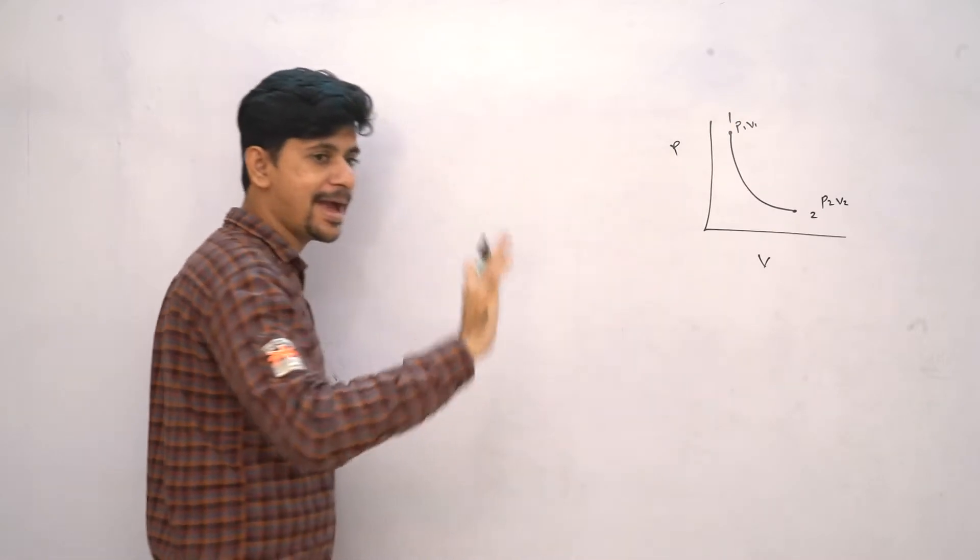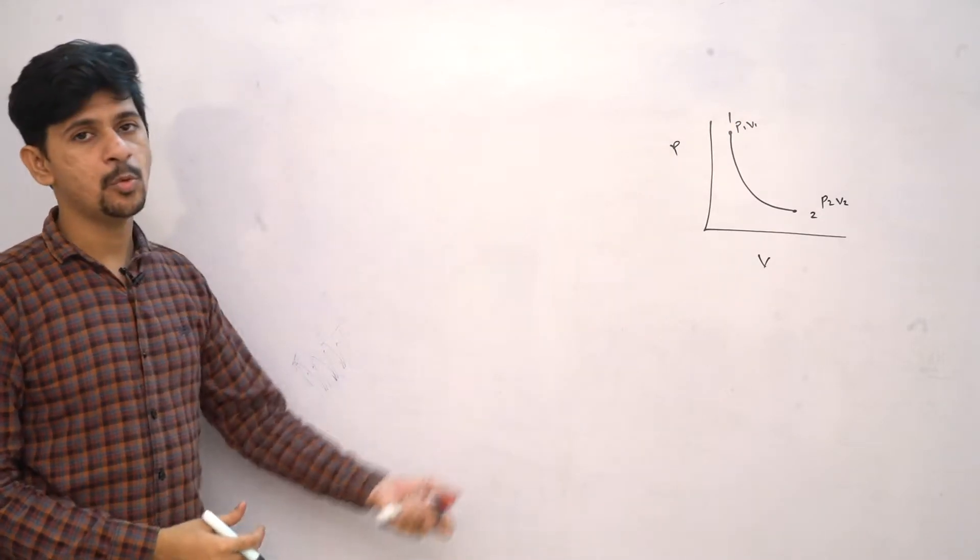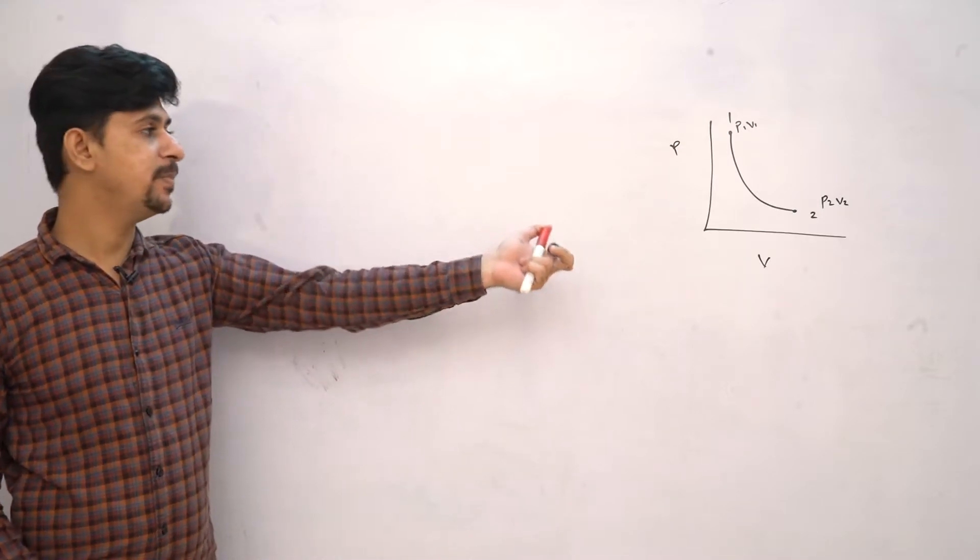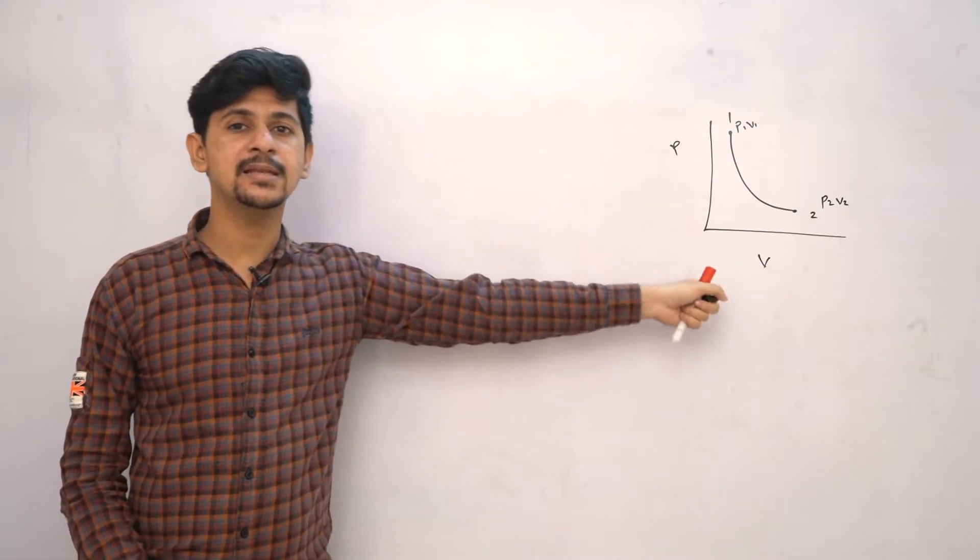We can see isothermal, but for isothermal PV diagram, it can be or it cannot be, since PV diagram does not tell us anything about temperature.